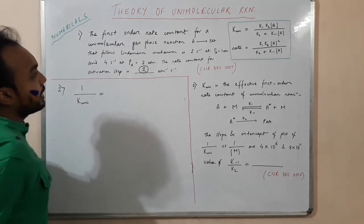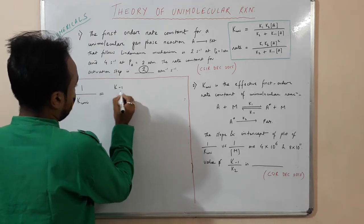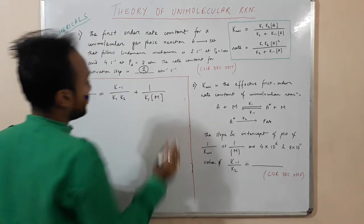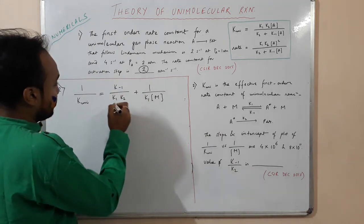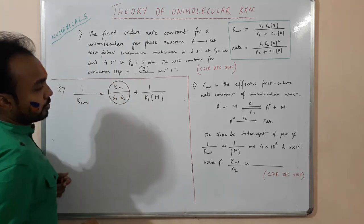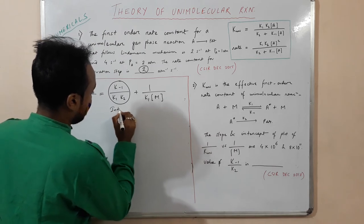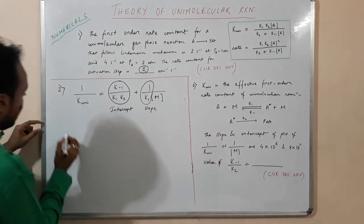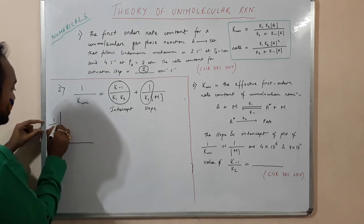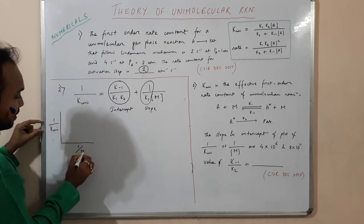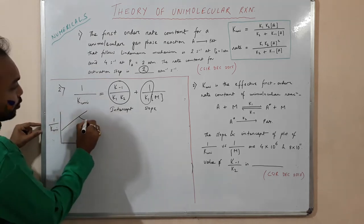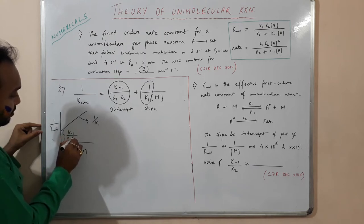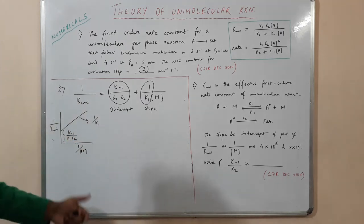Writing the equation: 1/K_uni = (K₋₁)/(K₁·K₂) + (1/K₁)·(1/[M]). Plotting 1/K_uni vs 1/[M], this is a linear plot where the slope = 1/K₁ and the intercept = K₋₁/(K₁·K₂).